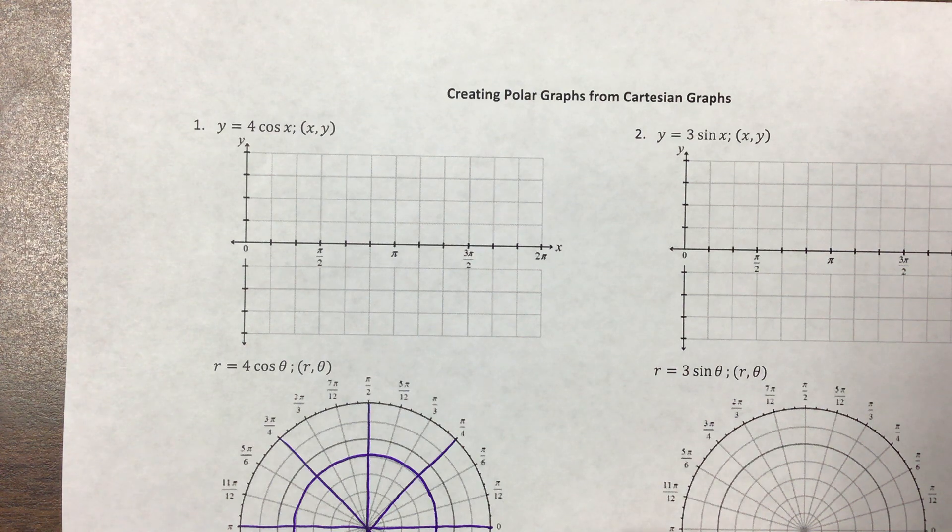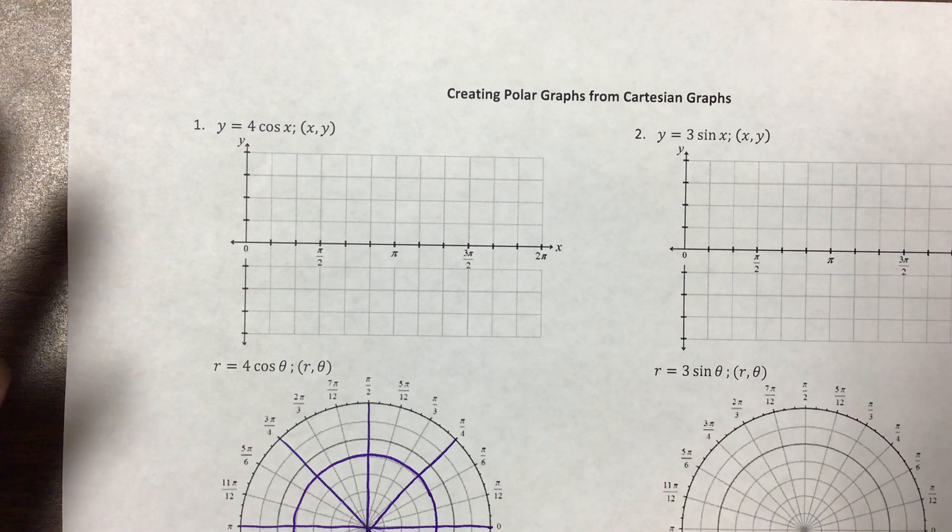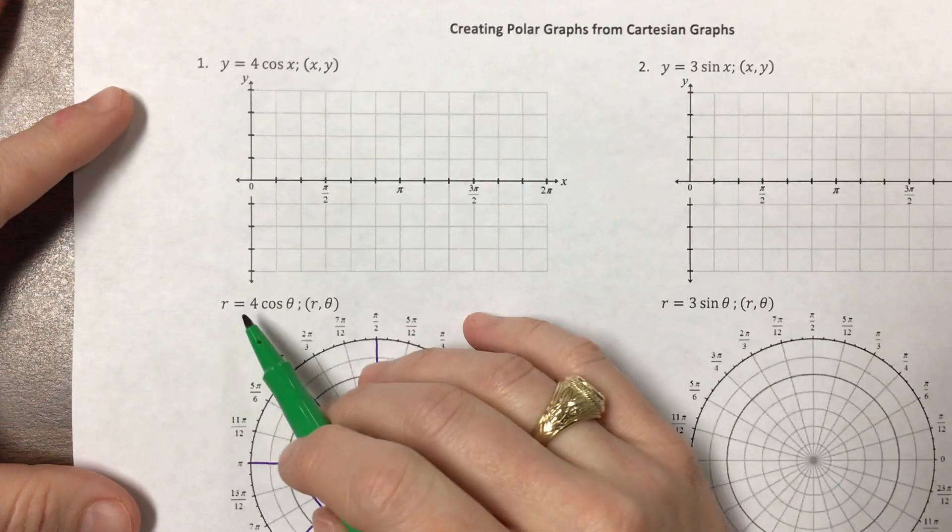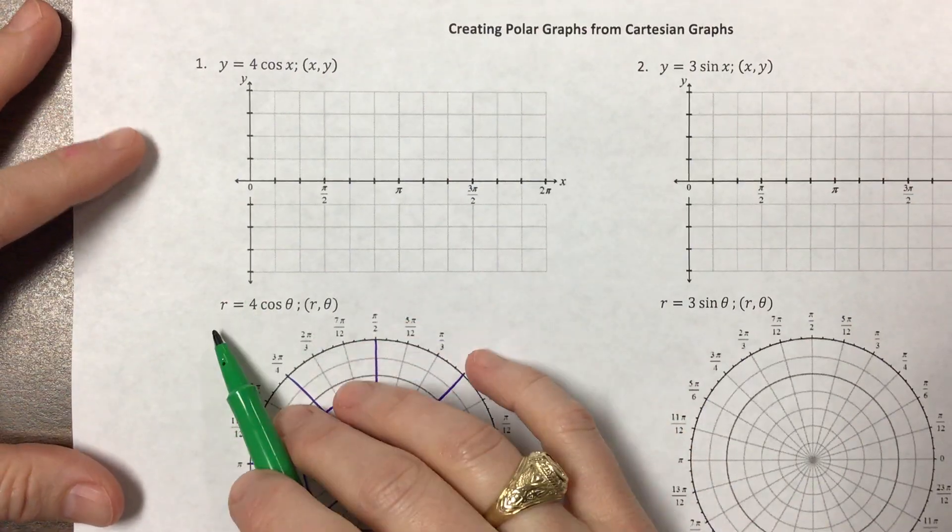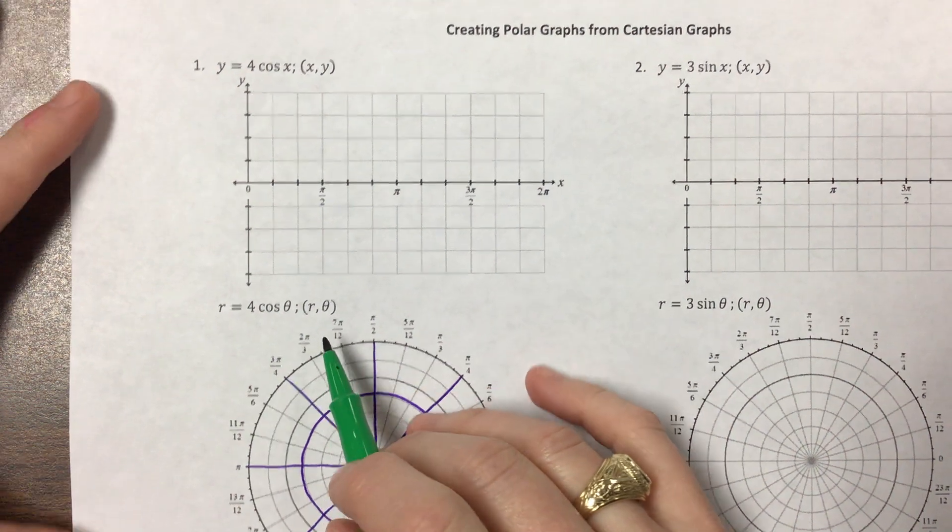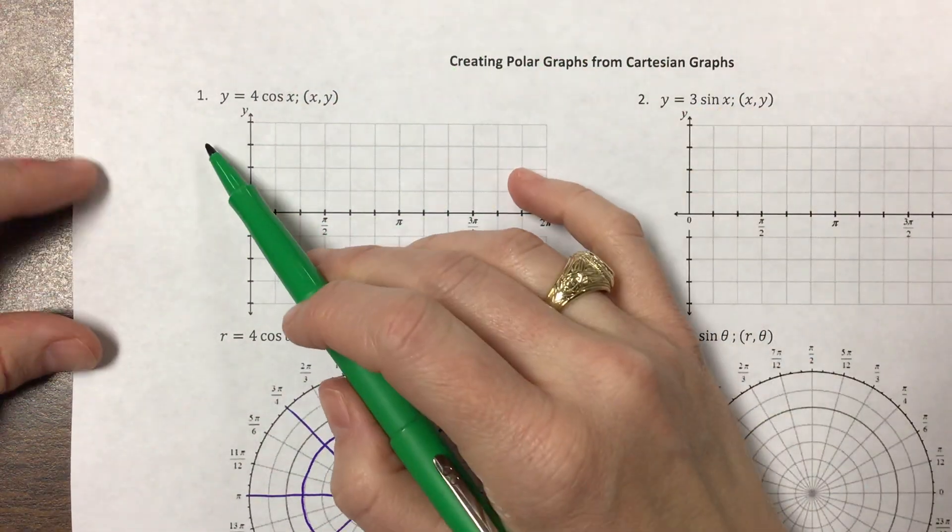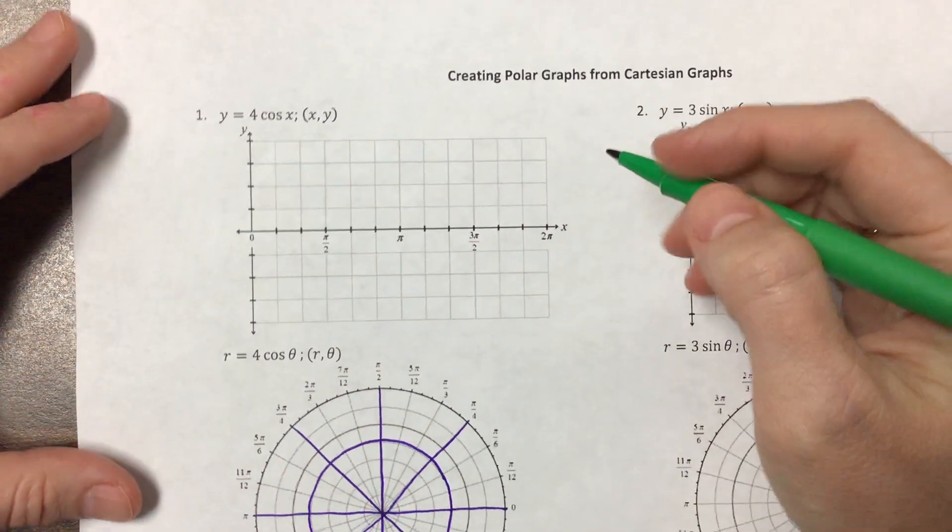In this one we're going to learn the connection between rectangular or Cartesian graphs and polar graphs. Our goal is to graph something like this, r = 4cos(θ). What we're going to do is think back to what it would look like if y = 4cos(x).